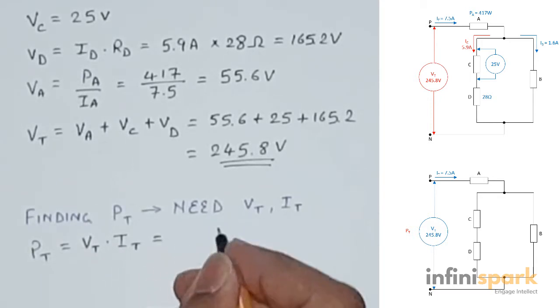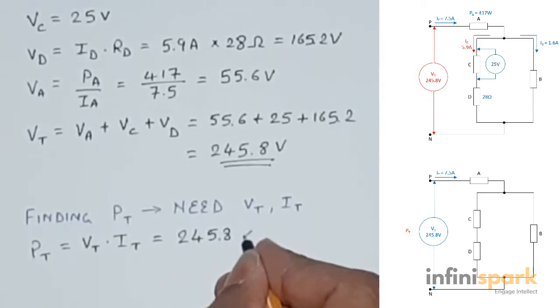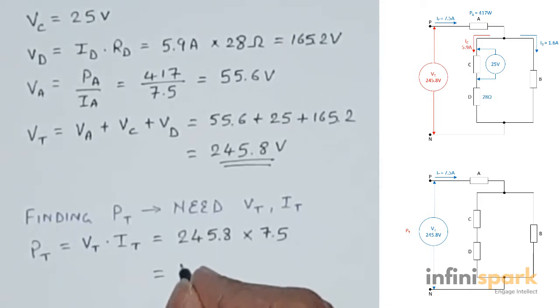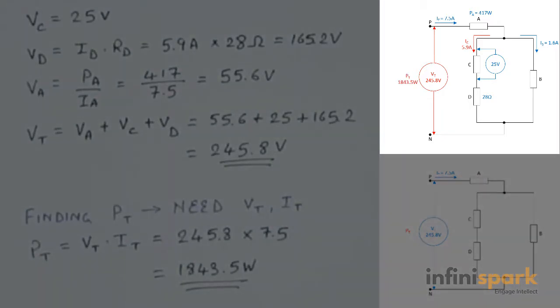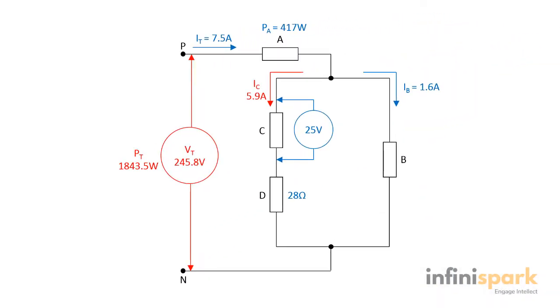We have already calculated VT, which is 245.8 volts, and we were given IT, which is 7.5 amps. 245.8 times 7.5 is 1843.5 watts. So the total power dissipated by the circuit is 1843.5 watts.